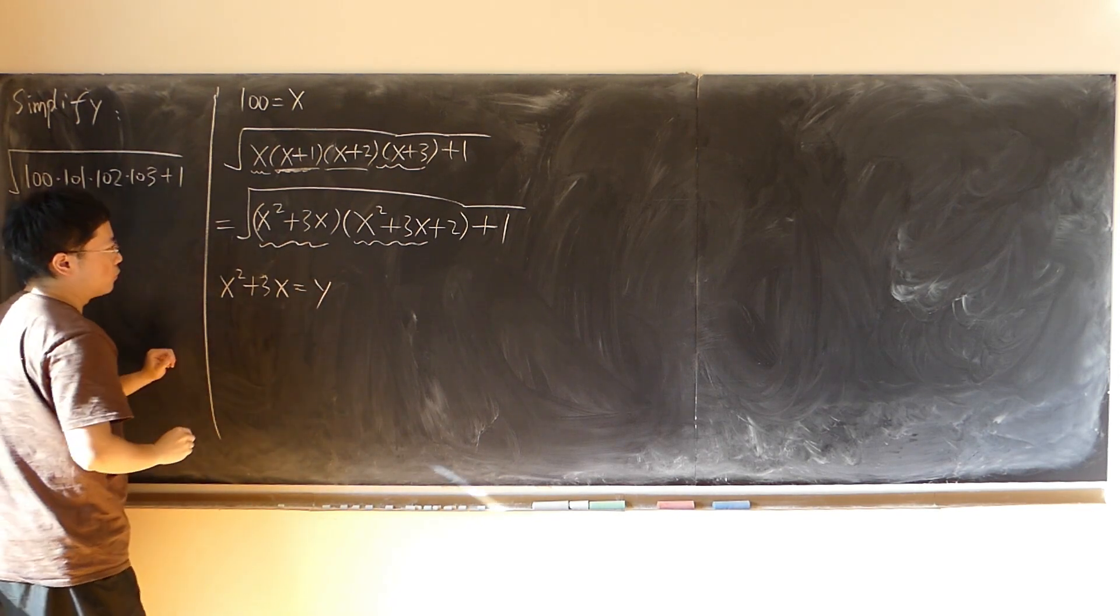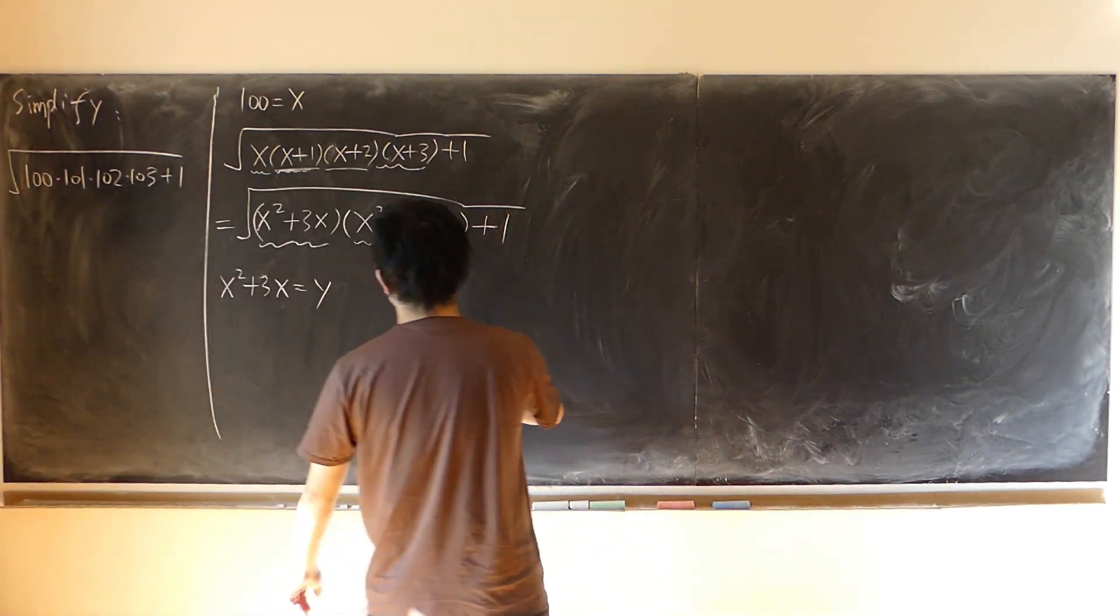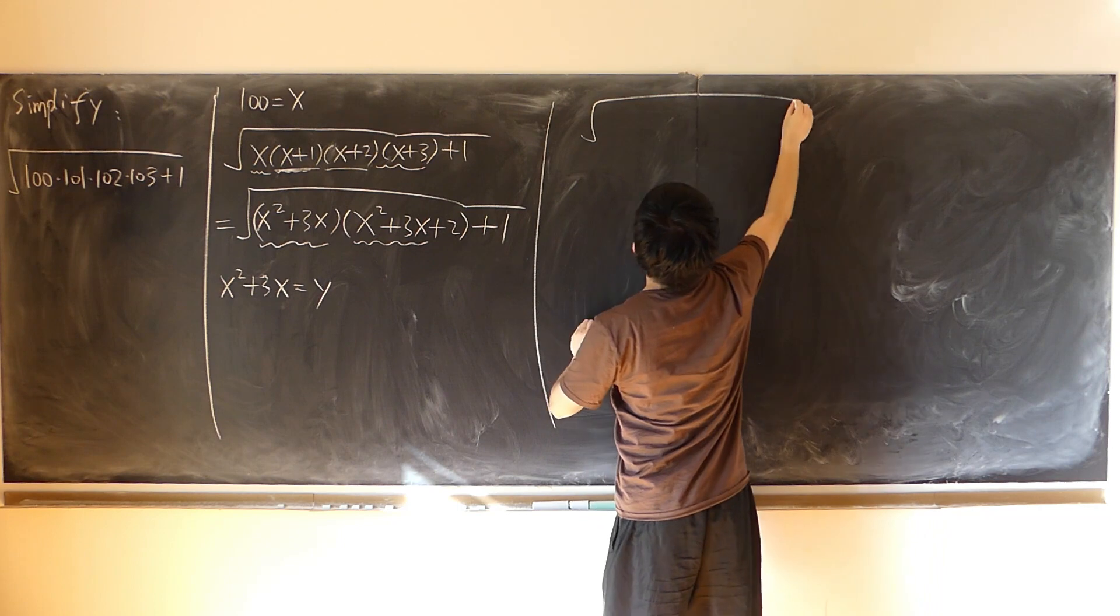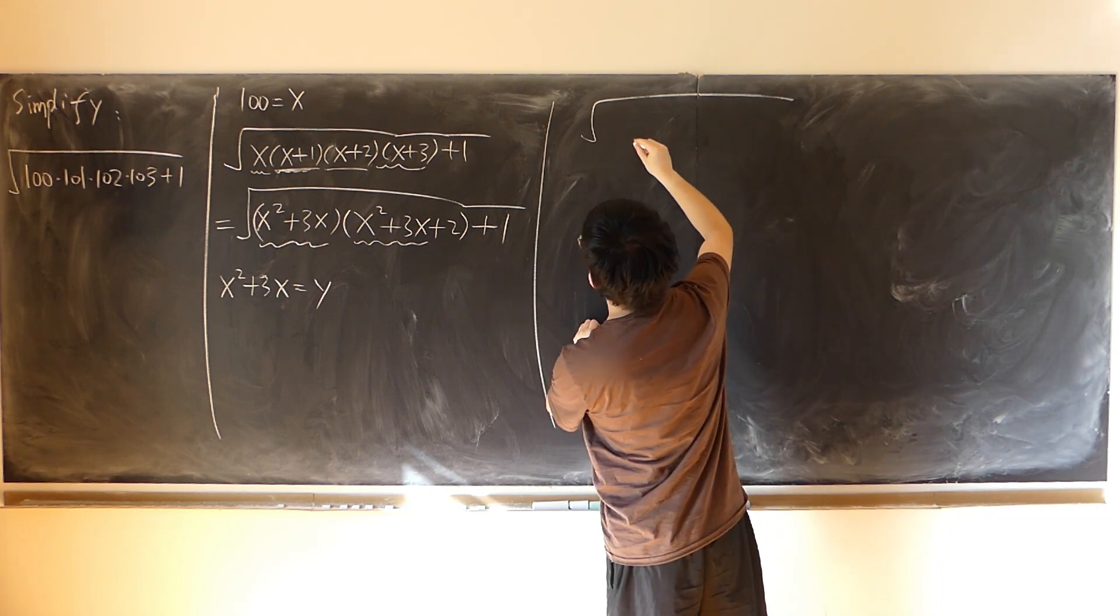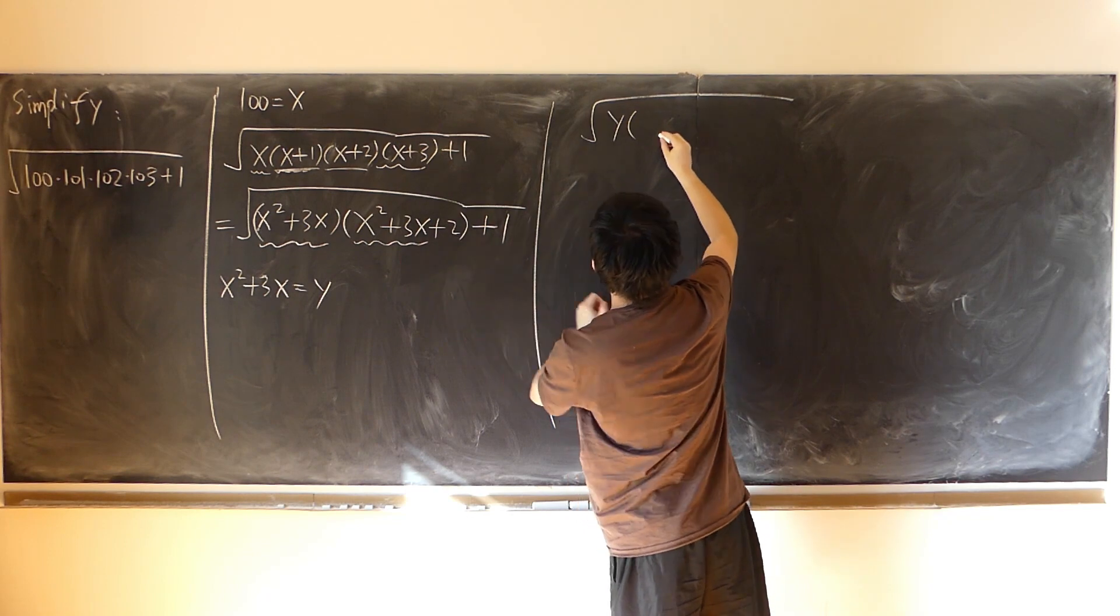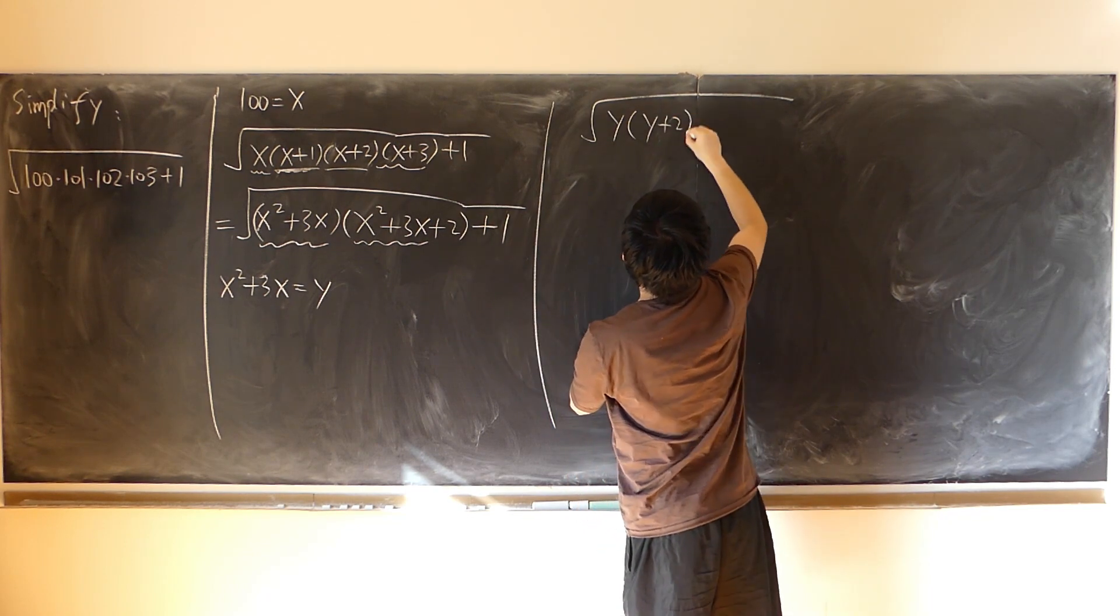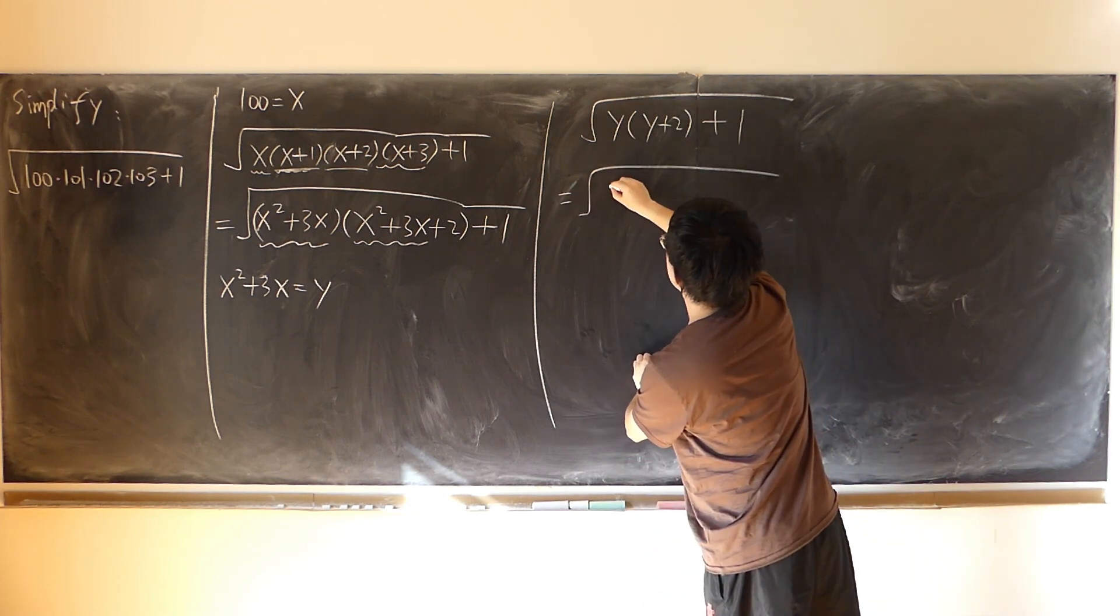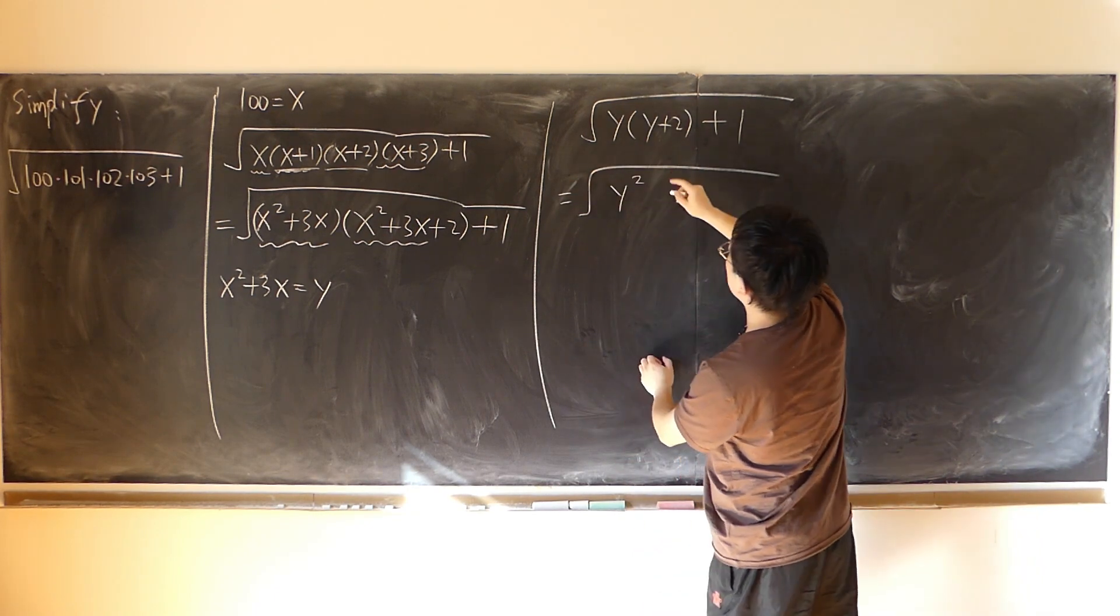Then the original expression becomes, under the square root: y times y plus 2, then plus 1. So that's essentially y squared plus 2y, then plus 1.